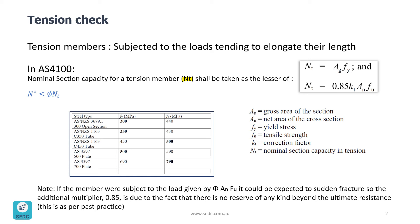The second formula: NT = 0.85·KT·An·FU. KT is correction factor, An is net area of the cross section, and FU is tensile strength.